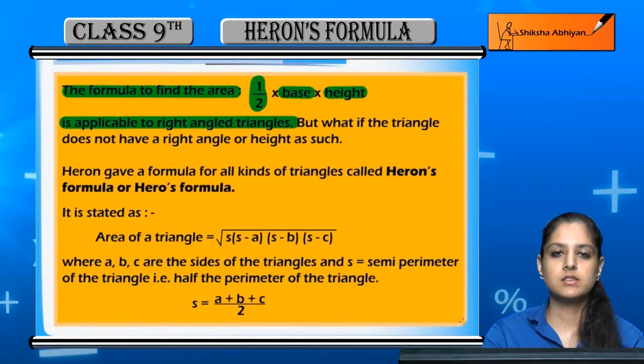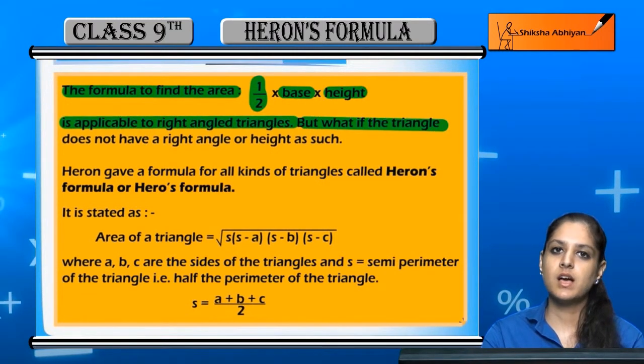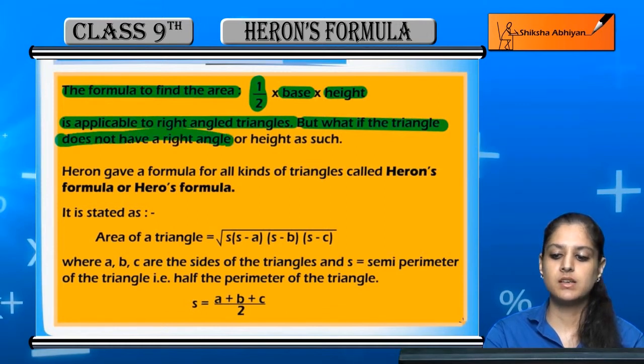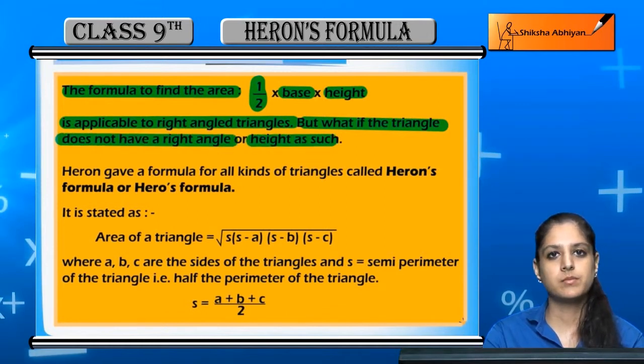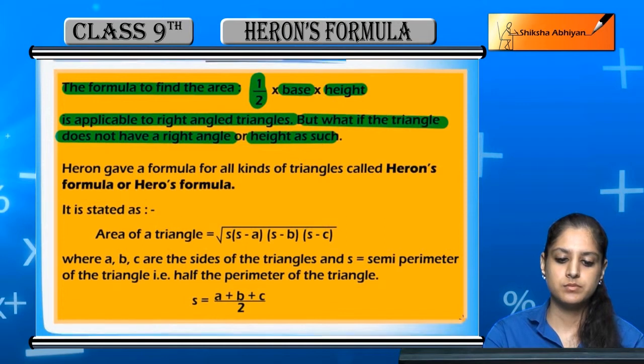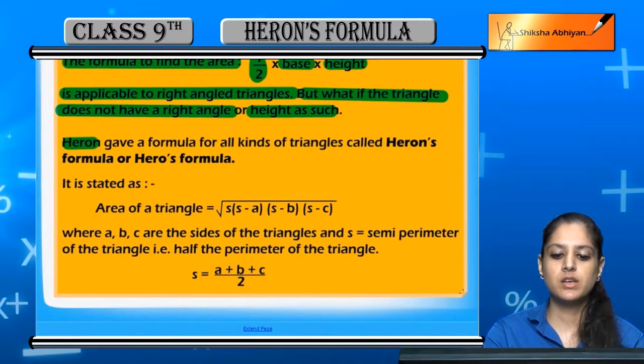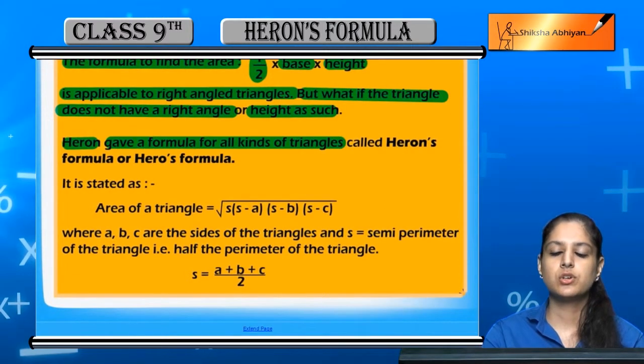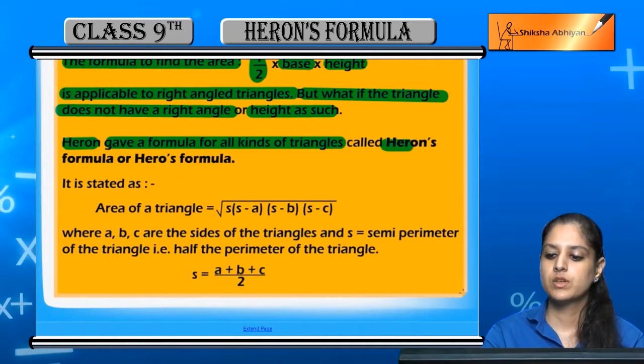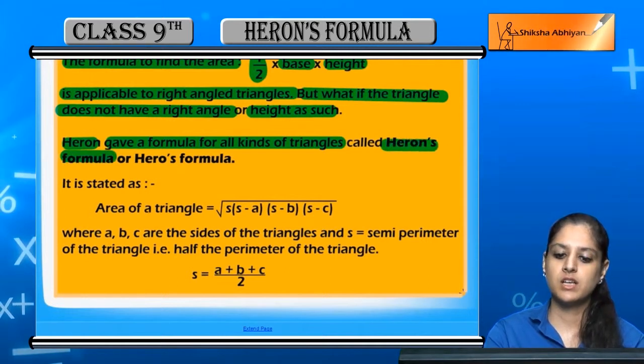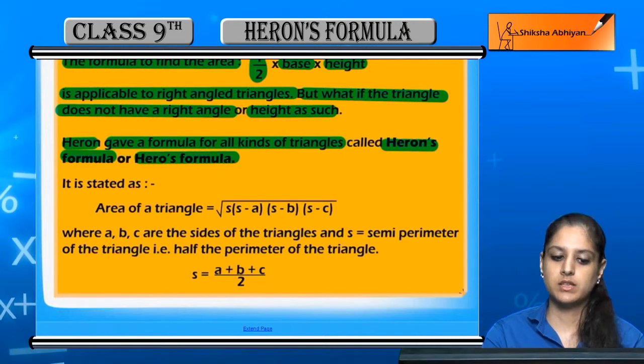But if there is a triangle that has no right angle or height, then what do we do? Heron has a formula which is applicable on every triangle, which is applicable to Heron's formula or Hero's formula.